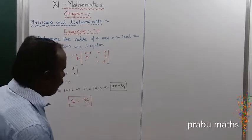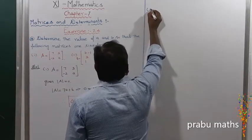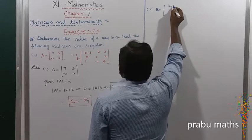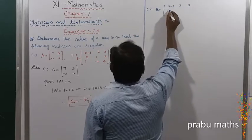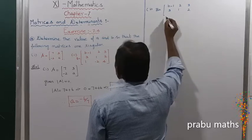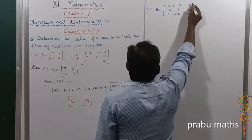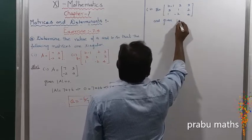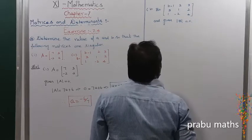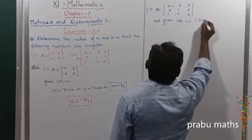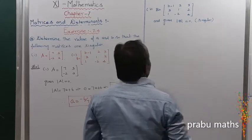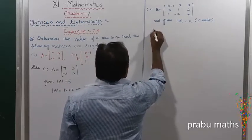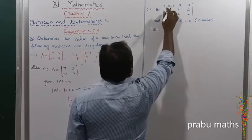Now we are going to the second subdivision. The second subdivision is B. The determinant of B: B is equal to the matrix [-1, 2, 3; 3, 1, 2; 1, -2, 4]. The given condition is det(B) is equal to 0, because this matrix is called singular — the given matrices are singular. So to find det(B):